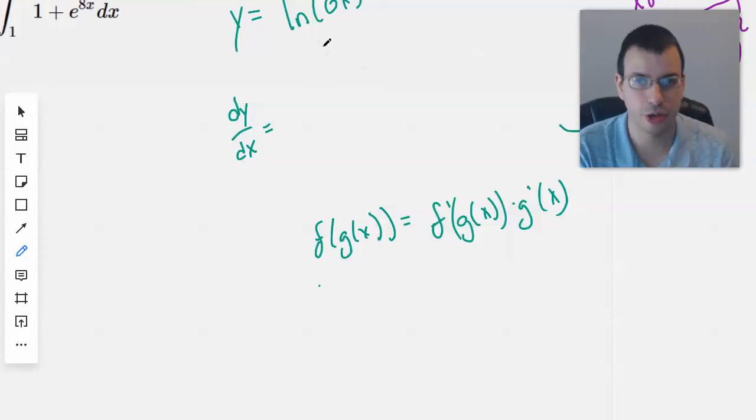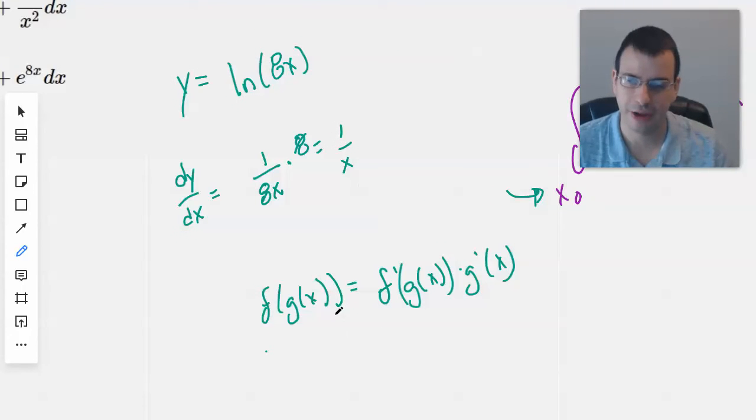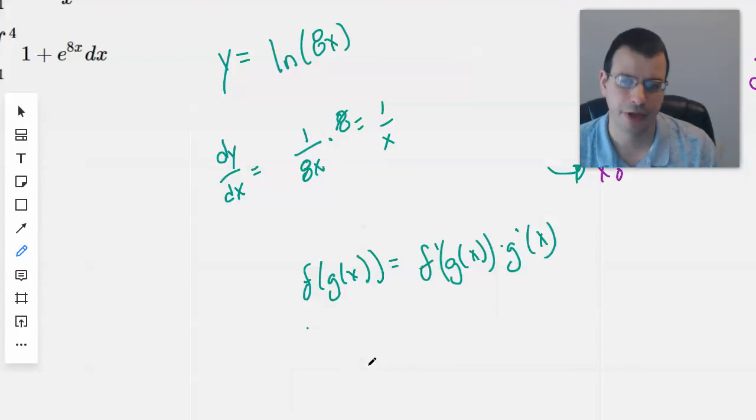So our f of x here will be natural log of x, and the derivative of that will be 1 over x. And so what we get is 1 over 8x times the derivative of the interior, which is derivative of 8x, which will be 8. The 8s cancel, and we're left with 1 over x. And this is kind of a unique thing that you'll see a lot of times with natural logs, and it's good to just kind of expect this. So if you have the derivative of, let's say, natural log of 6x, that'll be 1 over x.